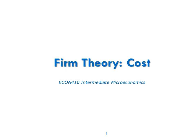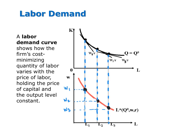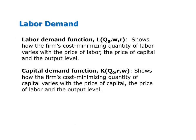This video is part of firm theory cost. In it I'll show you how to mathematically derive the demand functions for labor and capital. The labor demand function is a mathematical equation that shows how a firm's cost minimizing quantity of labor varies with the price of labor, the price of capital, and the output level.